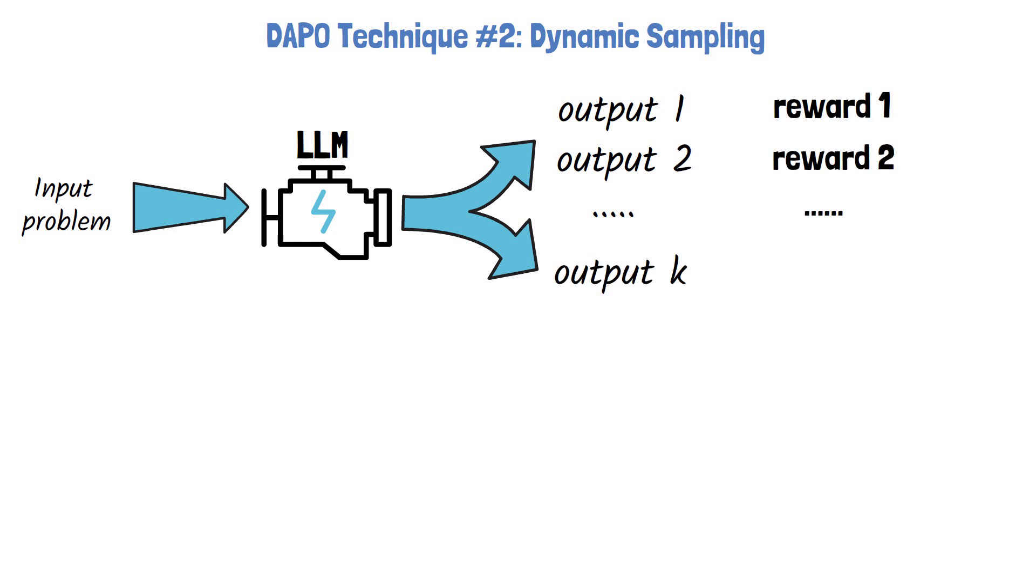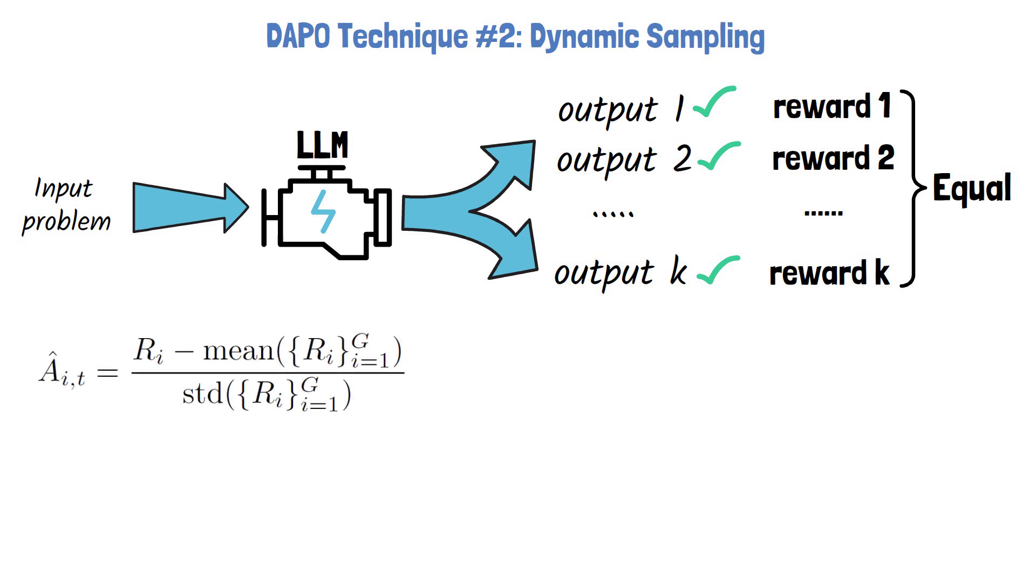In rule-based reinforcement learning, the reward is often fixed. For example, 1 if the solution is correct or negative 1 otherwise. So what happens if all sampled responses are correct? The reward is identical across all samples. And what does it do to the advantage?